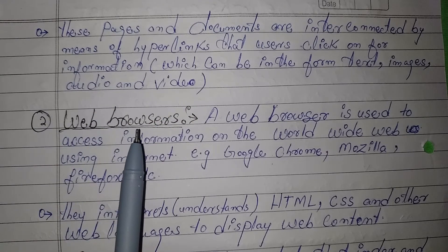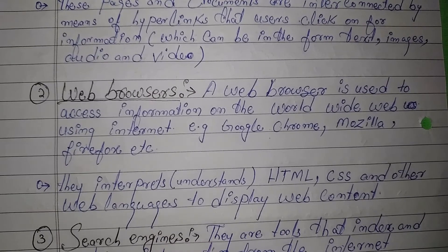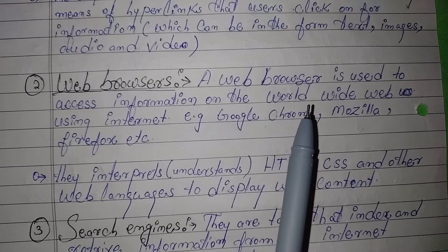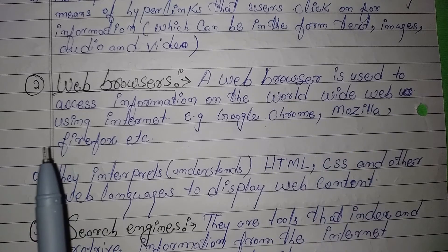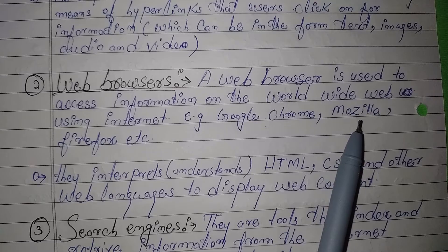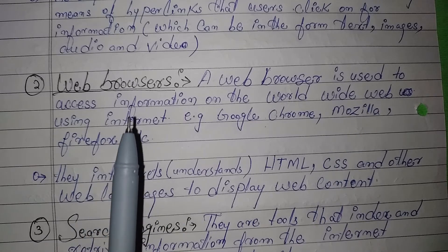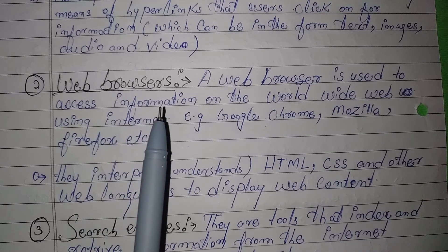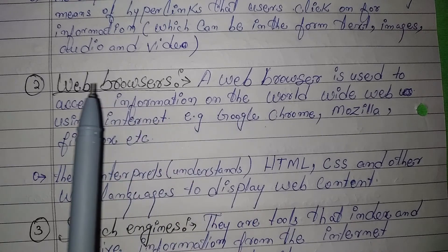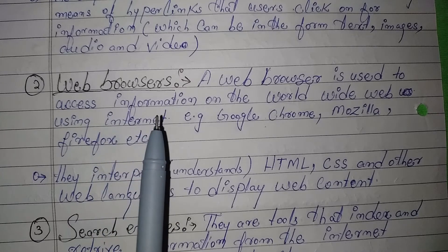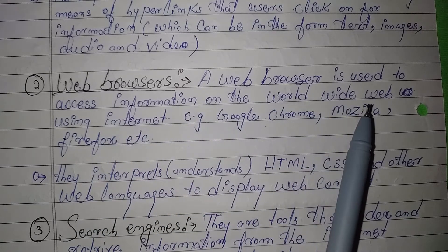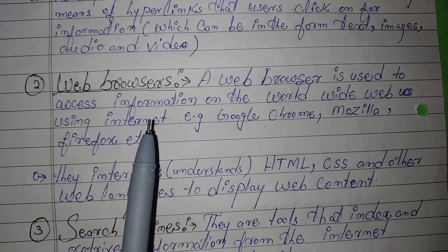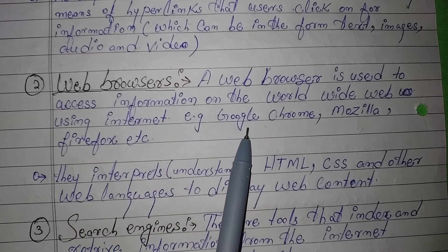The second application is the Web Browser. A web browser is used to access information on the World Wide Web using the internet. Easy examples are Google Chrome, Mozilla Firefox, etc.